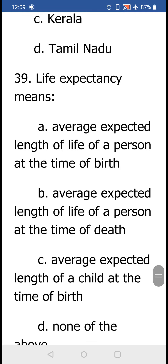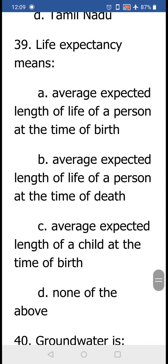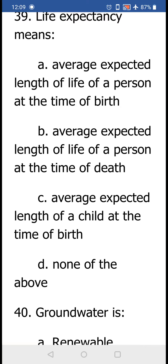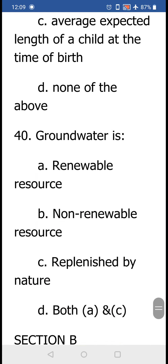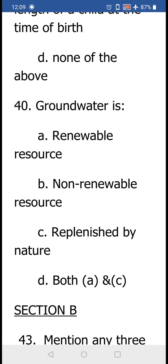Question number 39: Life expectancy means (a) average expected length of life of a person at the time of birth, (b) average expected length of life at the time of death, (c) average expected length of life of a child at the time of birth, or (d) none of the above. Life expectancy is calculated at the time of birth, so the correct answer is (a) average expected length of life of a person at the time of birth.